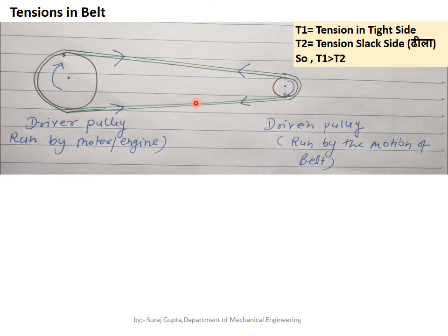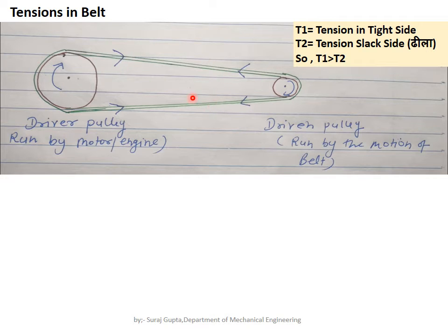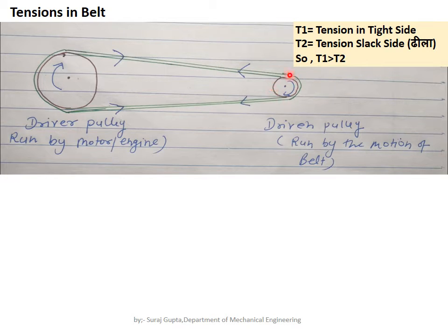Now let's understand tensions in the belt — where the tension is high and where it is low. For a pulley with friction, the tension is different on each side. If it were frictionless, the tension would be the same everywhere. The motor runs the driver pulley, which moves the belt, and the belt in turn drives the driven pulley.